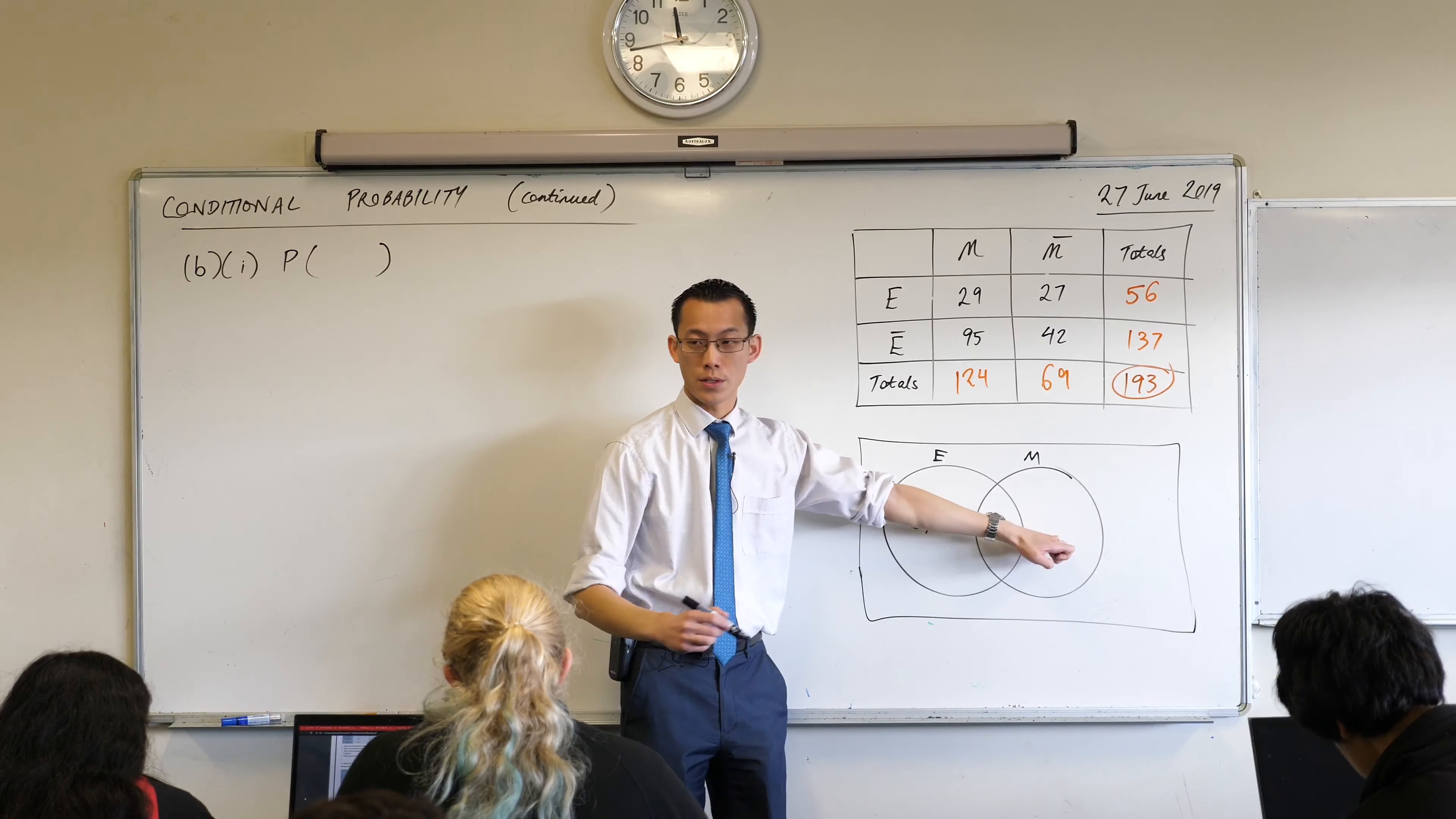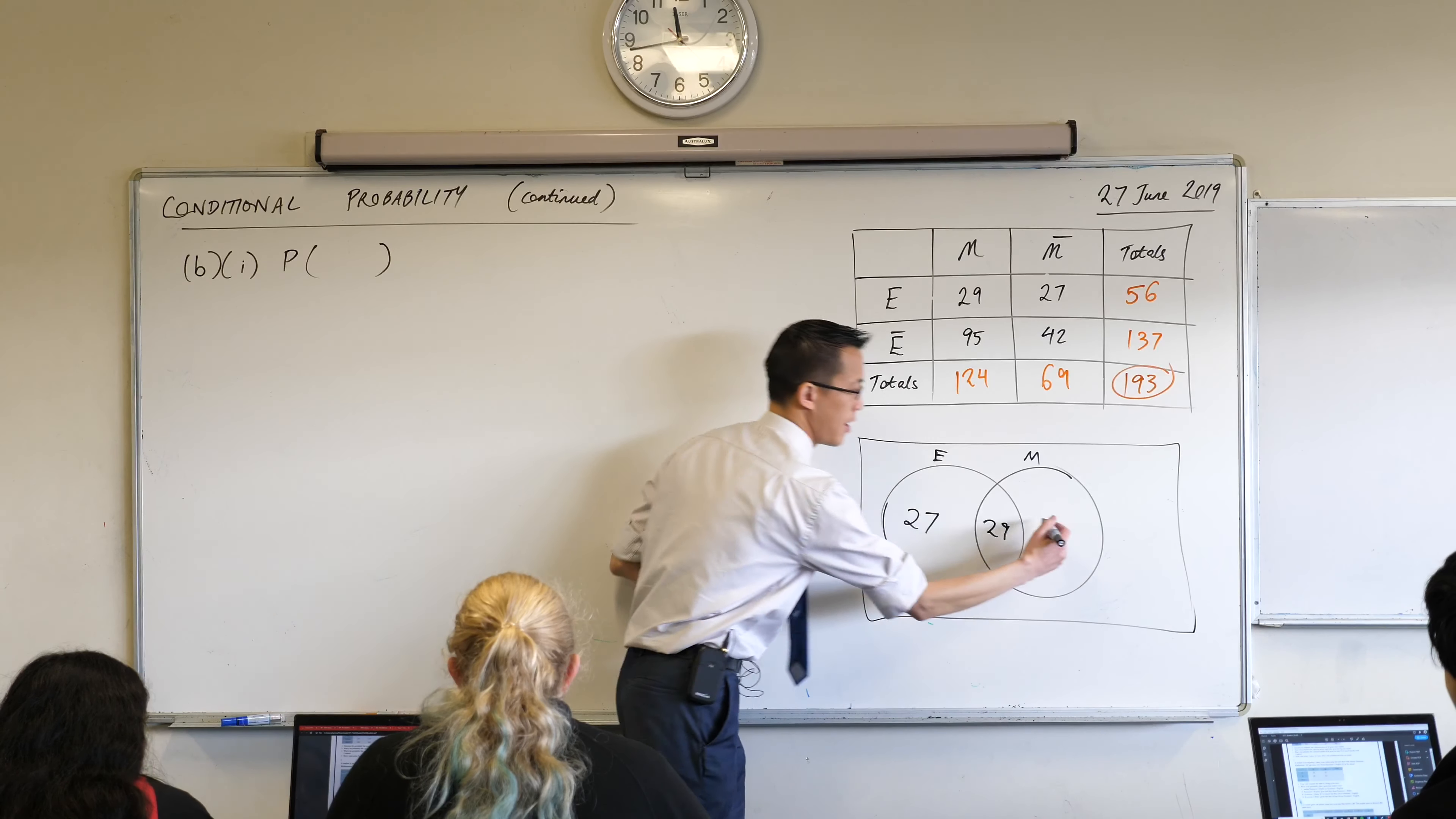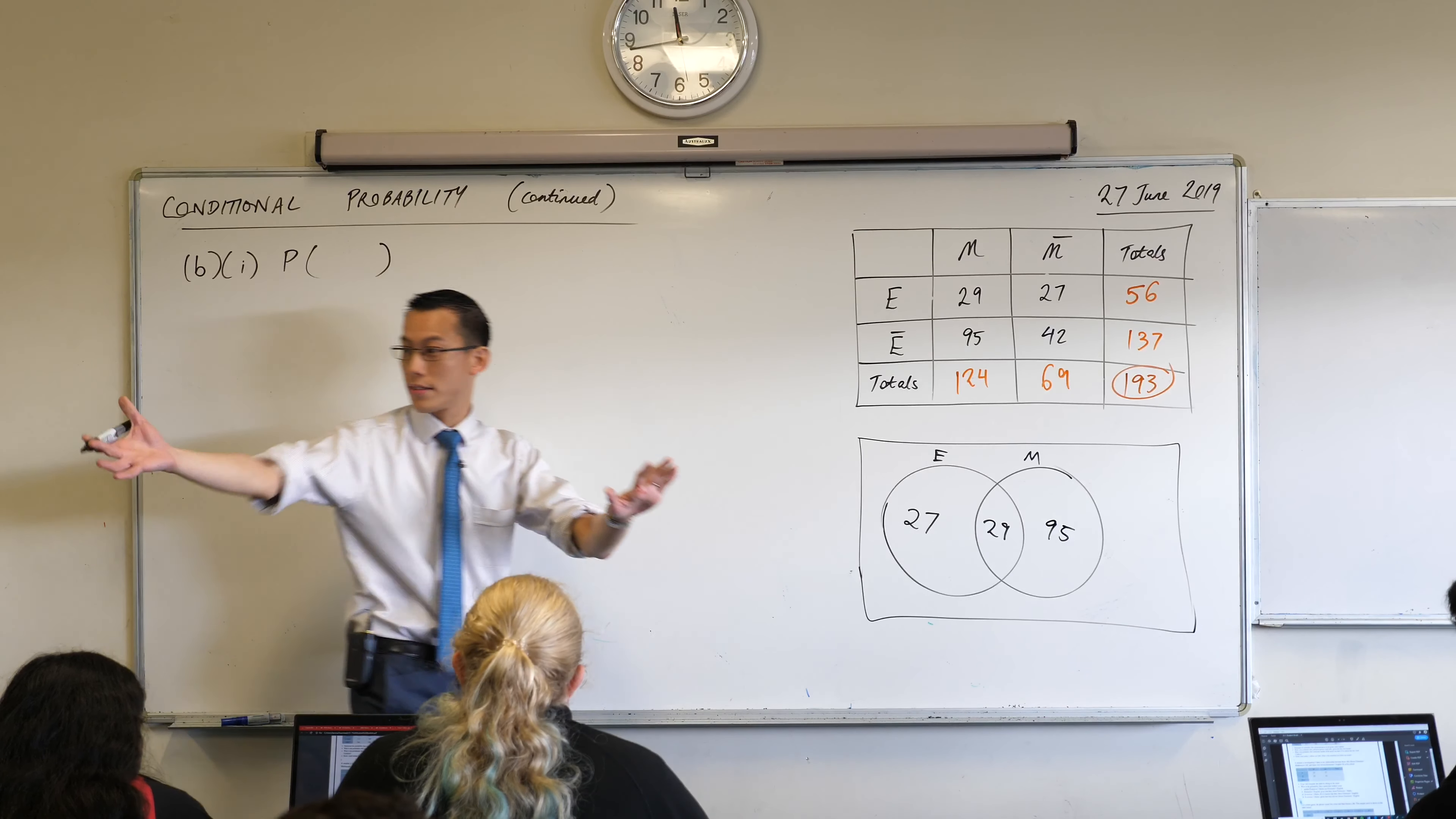Going to the opposite side, people who do extension 1 math but not extension 1 English—have a look. 95, very good. And then there's that last number. Doesn't belong in the circles at all. It's not extension 1 English, not extension 1 math. It's the 42. So it's outside this diagram, right? Over here, 42.